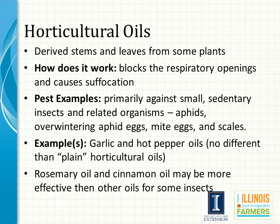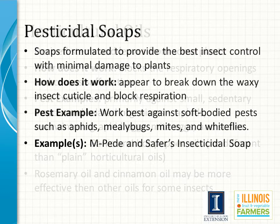Horticultural oils are derived from stem and plant leaf tissues of select plants. Oils block the respiratory openings of the pest, which then causes suffocation. Horticultural oils primarily target smaller insects that are sedentary, which include aphids, overwintering aphid eggs, mite eggs, and scales. Garlic and hot pepper oils have been popular for controlling certain pest populations, although research shows that these are no different than other plain horticultural oils. Rosemary and cinnamon oil may be more effective than other horticultural oils for some insects.